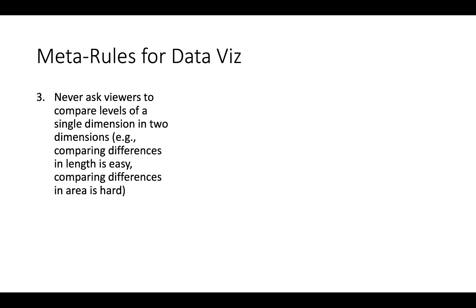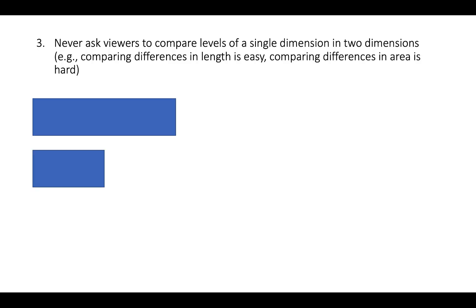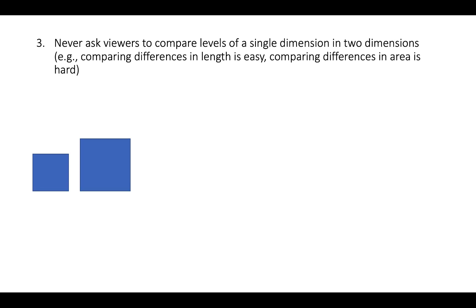The third rule is: never ask viewers to compare levels of a single dimension in two dimensions. When talking about differences in sales between two customers or salesmen, that's a single data dimension, so we want to compare differences in length or height rather than differences in area. It's very easy to compare two bars — the top bar is about twice as long as the bottom bar, and that makes complete sense.